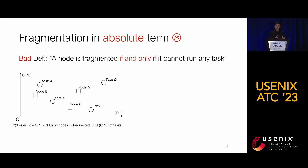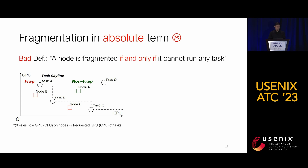We first review a straw man definition, often found in discussions with cluster operators. They usually define fragmentation in absolute terms: a node is fragmented if and only if it cannot run any tasks. However, this absolute definition can be problematic. Consider the figure where the Y-axis represents idle GPU on the node and requested GPU of tasks, while the X-axis is for CPUs. Given such a definition, we can split the space into two parts: the non-fragmented part includes node A, and the fragmented part includes node B. Node A is non-fragmented because it can host task B.